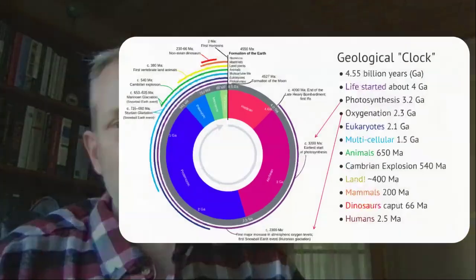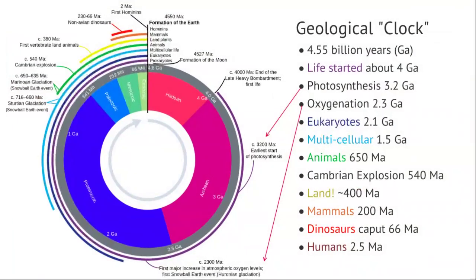We're going to start with a kind of clock that represents the timeline of Earth. Some of this is hard to see, so I put the relevant information over to the right. Where appropriate I've used the same color scheme for the text as the bars that run around the outside, and where that wasn't applicable I drew a few arrows to point out where they are.